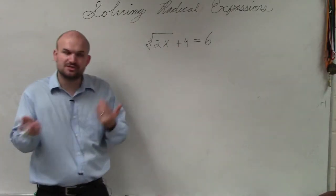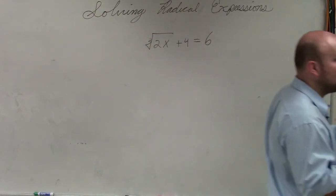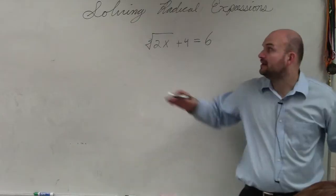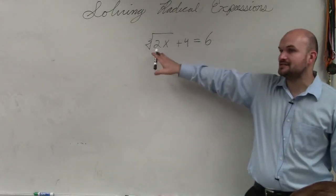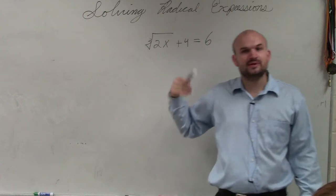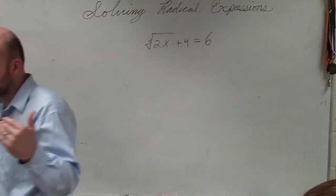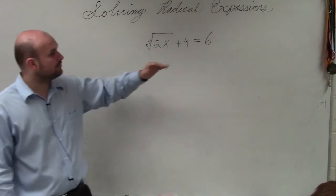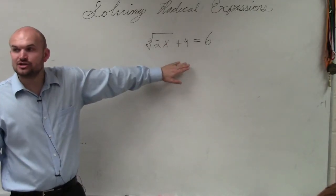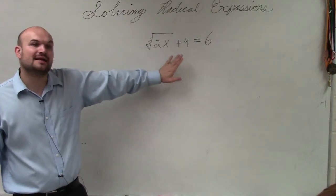Before you start doing inverse operations — if you guys remember when we were looking at inverse operations last time, I just had that square root, or the variable raised to a power, by itself. In this case, I have the cube root of 2x, but I have an added 4 to it. So before we can apply the inverse operation of a rational power or a radical, we have to isolate it. Make sure it is not being added or subtracted by any numbers.